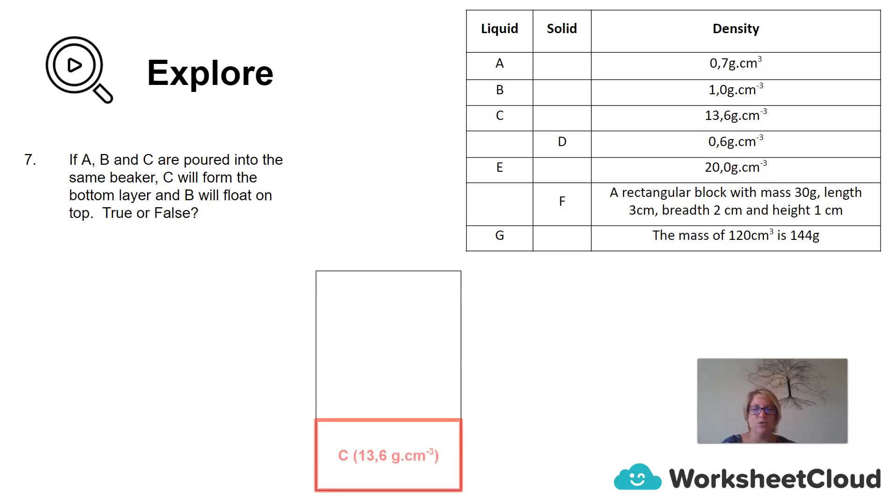Let's see if we can get this right. C, which is 13.0 grams per centimeter cubed, has got the greatest density, so that will be the bottom layer. The next layer will be B, which is 1.0 grams per centimeter cubed, and then the top layer is going to be A, because it's the lowest density, and that is 0.7 grams per centimeter cubed.